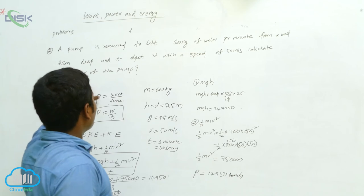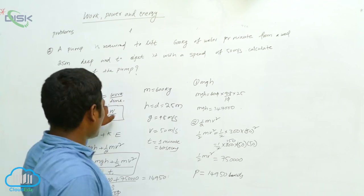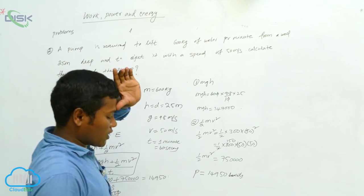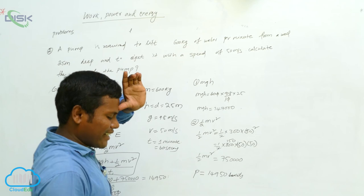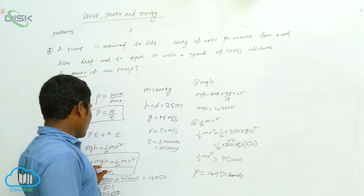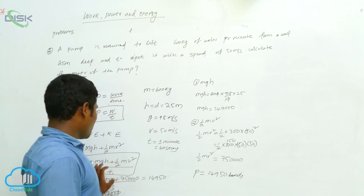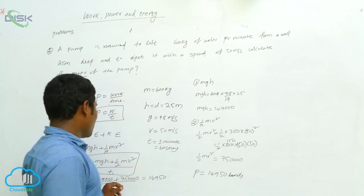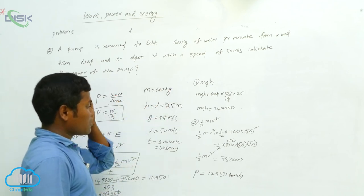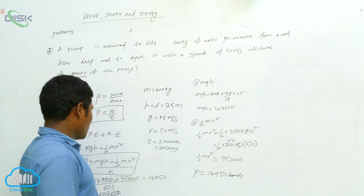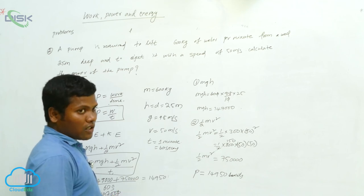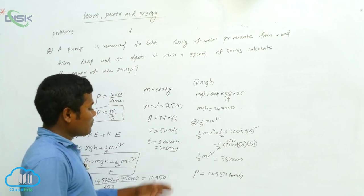The problem is asking for the power of the pump. The formula is P equals work divided by time. There are two types of work: potential energy and kinetic energy. Potential energy is mgh, kinetic energy is half mv squared. So we write P equals mgh plus half mv squared divided by t. Find the mgh value, find the half mv squared value, add both, then divide by time. Time is given as 1 minute, which is 60 seconds.